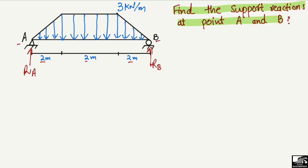To find the support reactions, we first divide the trapezoidal load into three parts. The best approach is to split the trapezoidal area into three regions: the first area is a triangle on the left, the second area is a rectangle in the middle, and the third area is a triangle on the right.